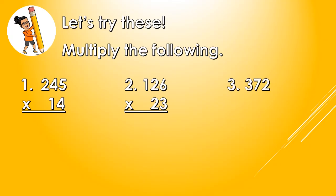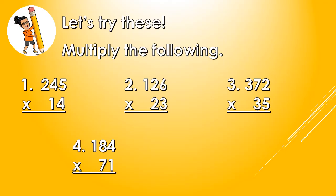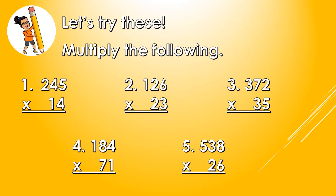Let's do number 3: 372 times 35. Let's do number 4: 184 times 71. Again, if you're not yet done multiplying, just simply pause this video lesson. And last number, number 5: 538 times 26. Please pause the video lesson if you're not yet done multiplying numbers 1 to 5.